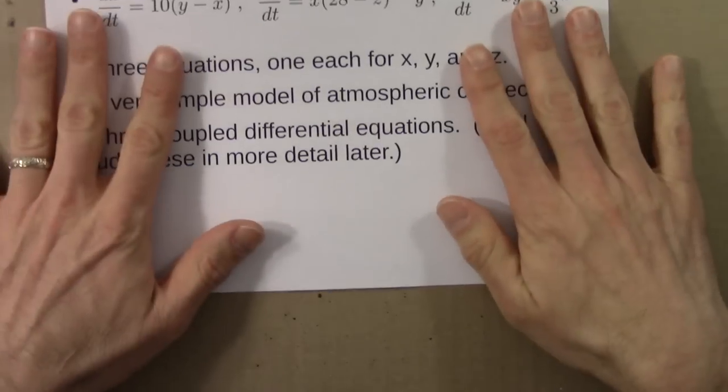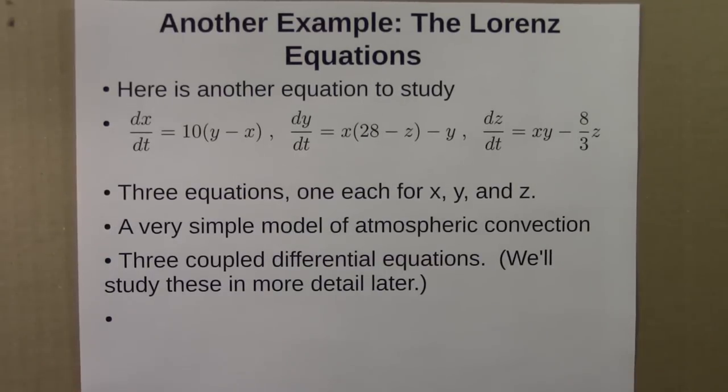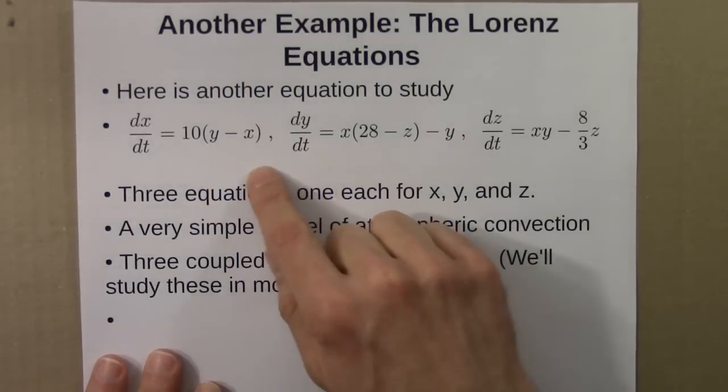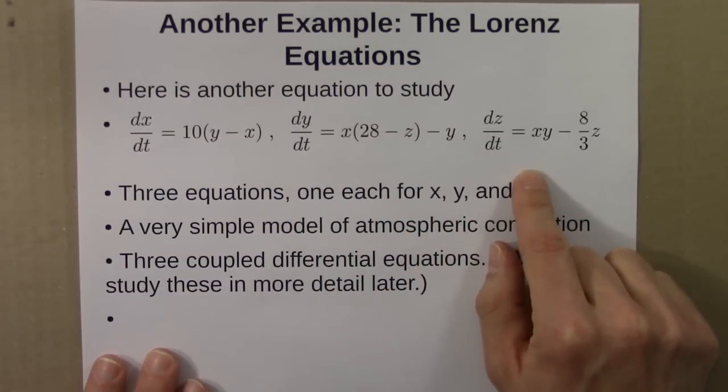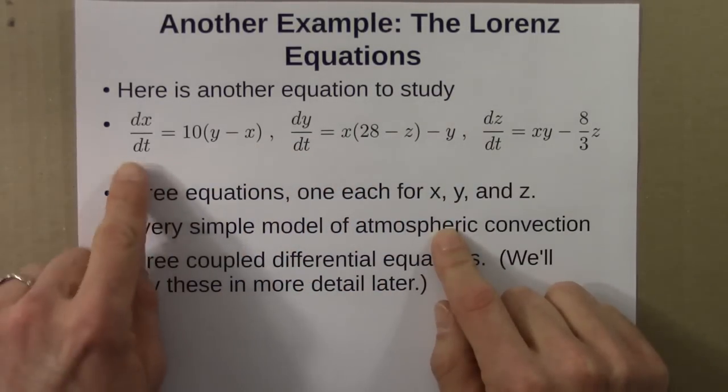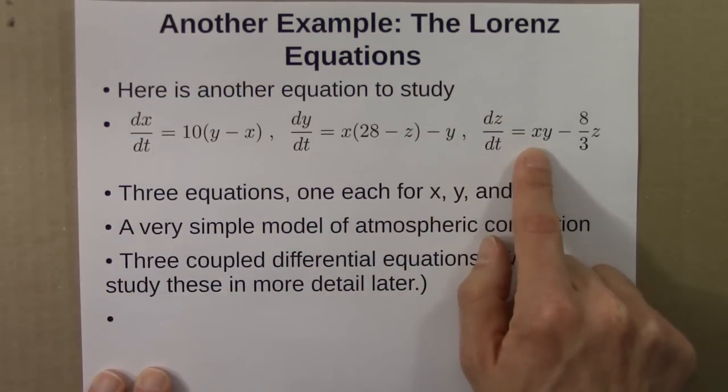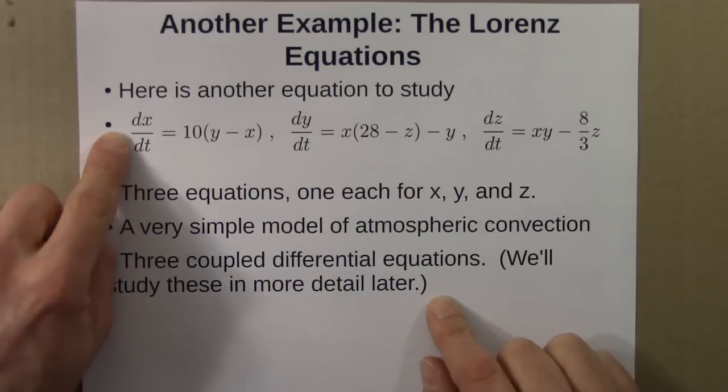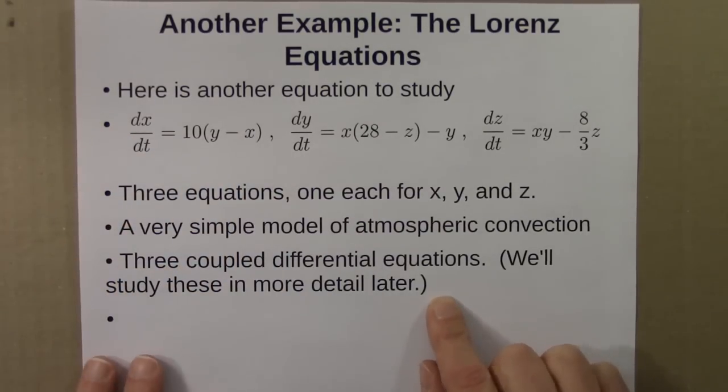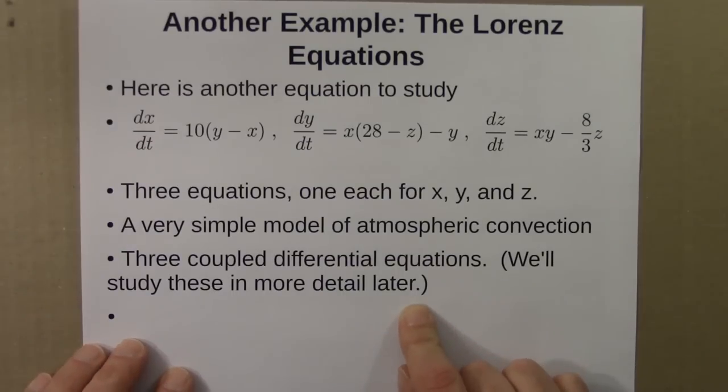Let's do another example. This is a famous example from the history of dynamical systems and chaos. These are called the Lorenz equations. These are also differential equations. This time, three equations for the price of one. There's an equation for x, an equation for y, an equation for z. And x, y, and z all depend on each other. The rate of change of z depends on x, y, and z. The rate of change of x depends on y and x.